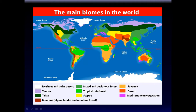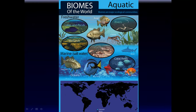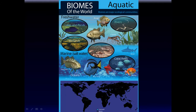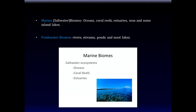Before getting into terrestrial biomes, let's cover aquatic biomes. Aquatic biomes include freshwater and marine (salt water). Freshwater biomes include lakes, ponds, wetlands, estuaries, and rivers. Marine biomes include coral reefs, oceans, seas, and some inland lakes. Marine biomes are, of course, salt water biomes — oceans, coral reefs, estuaries, and seas.